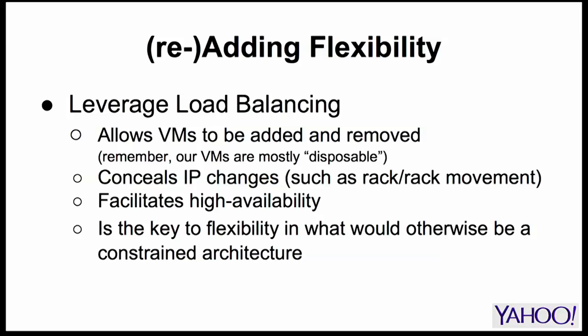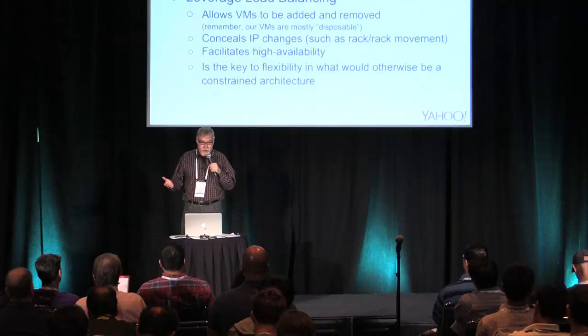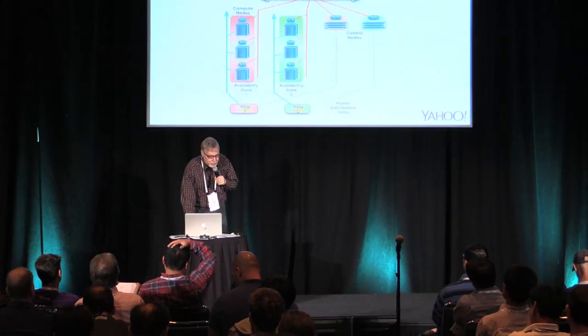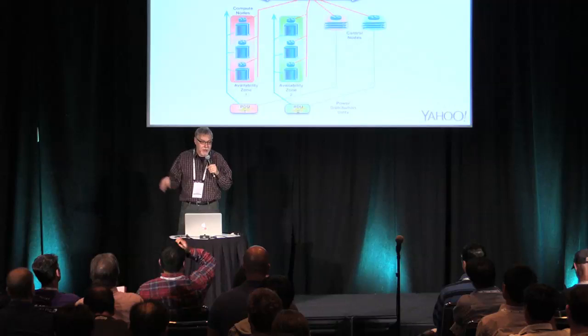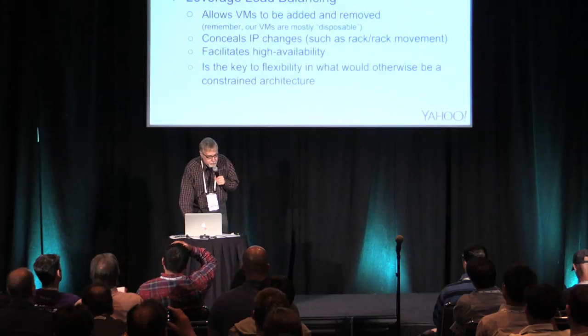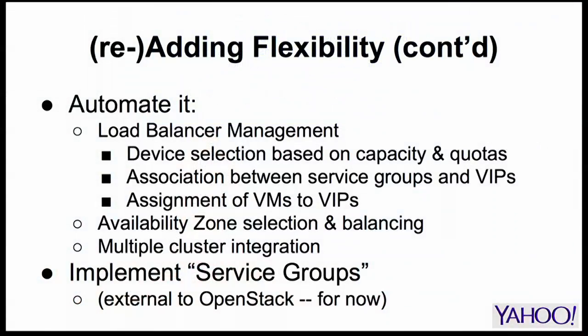VMs can come up, VMs can go down — as long as you coordinate that with your load balancers, from the VIP's perspective nothing has changed. We already do this not just for scale but for high availability. In fact, we use load balancers within the OpenStack control plane itself. The control nodes for OpenStack are also in their own availability zones, and we use load balancing to provide that high availability.